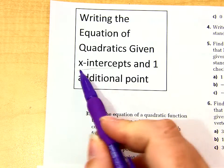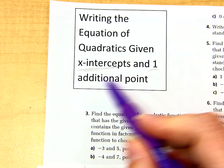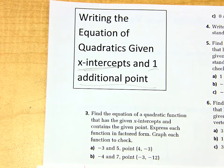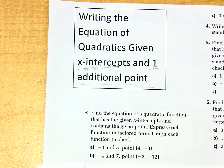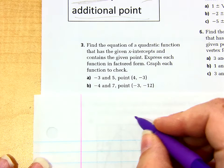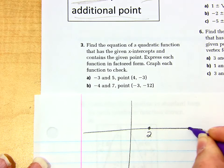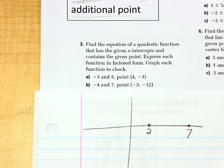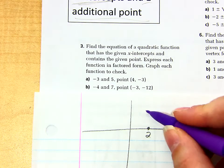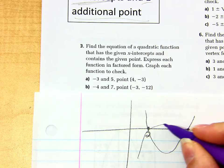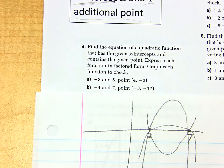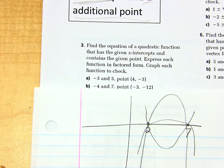Today I'm going to give you the x-intercepts and one additional point. Can you think why I have to give you one additional point? What if I just said, give me the equation of a quadratic that crosses the x-axis at 2 and 7? If I just said give me a quadratic that crosses at 2 and at 7, there's an infinite number of parabolas that cross at 2 and 7. I could have one like this, one that's upside down, a really narrow one — there's so many of them.